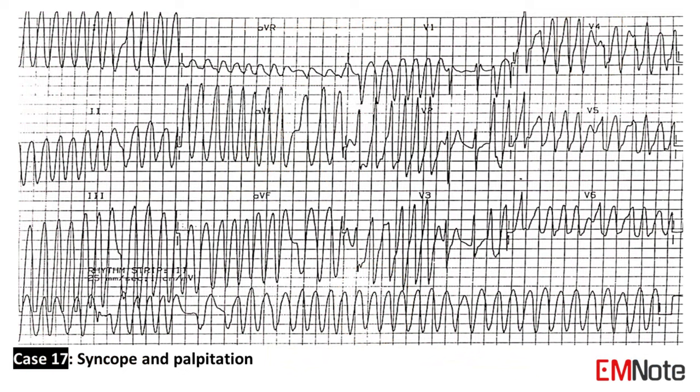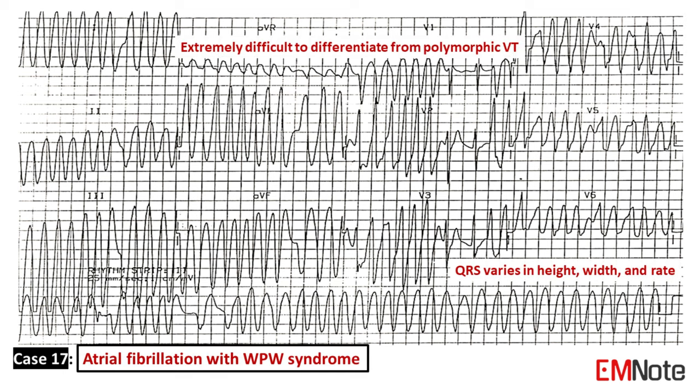Case 17: The patient presents with syncope and palpitation. The ECG shows a wide irregular rhythm with heart rates approaching 300 per minute in some places. The wide QRS complex is due to abnormal ventricular depolarization via an accessory pathway. The ECG features are compatible with atrial fibrillation and pre-excitation, such as WPW syndrome. Features include irregular rhythm with extremely high rates greater than 200 per minute, wide QRS complex, and beat-to-beat variation in QRS morphology with stable QRS axis, unlike polymorphic VT.